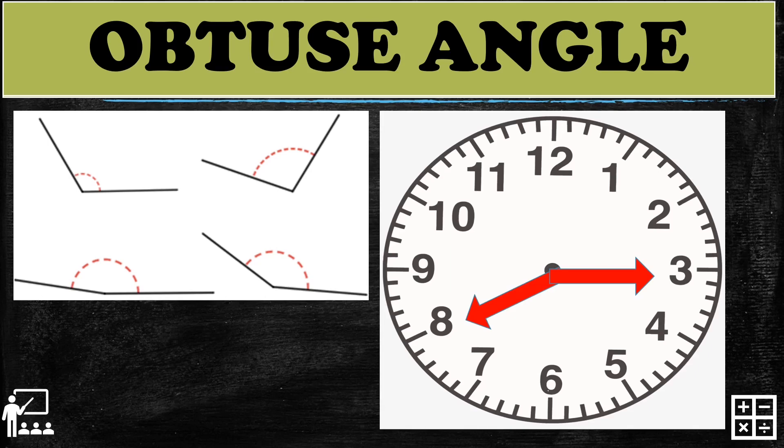Again I will use the clock to represent obtuse angles. Some of these are 3:40 or 8:15, and 2:55 or 11:13. These are some angles that can be represented by a clock. You can play with the clock to explore how to use it to form an obtuse angle.